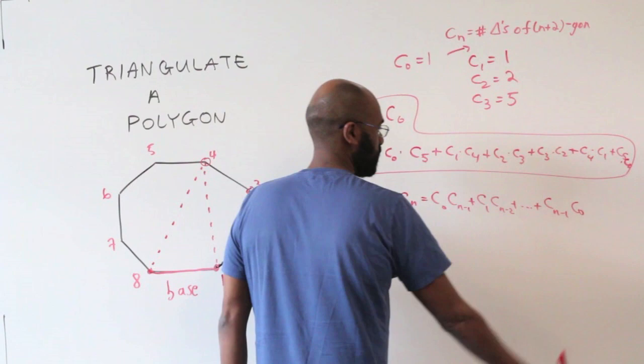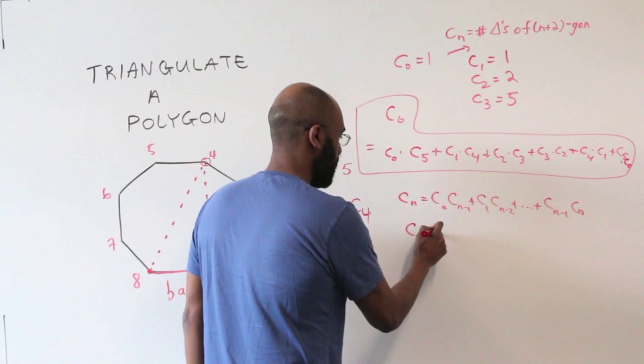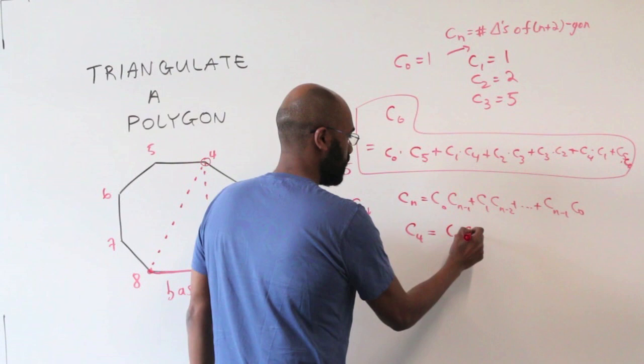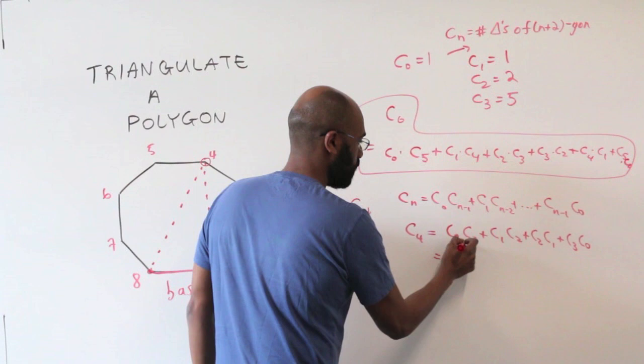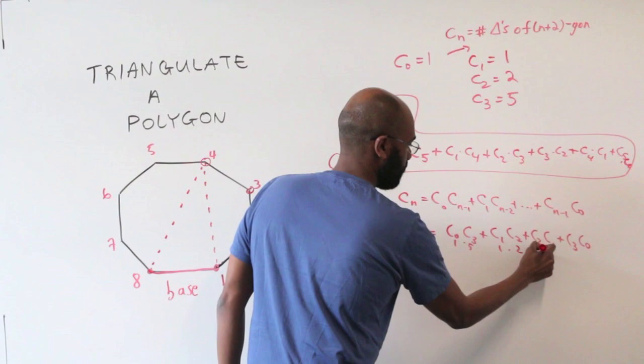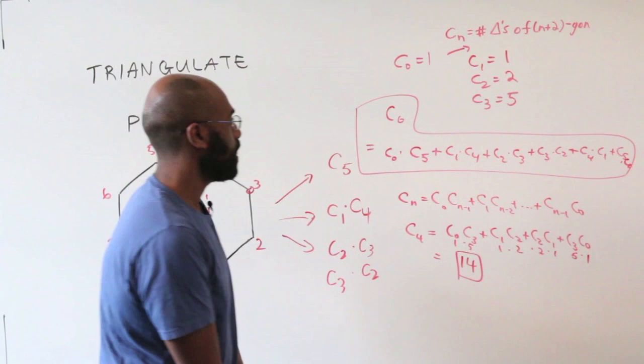Let's use this to calculate more values. C_4, the number of triangulations of a 6-gon, equals C_0·C_3 + C_1·C_2 + C_2·C_1 + C_3·C_0. C_3 is 5 and C_0 is 1, so we have 1·5 + 1·2 + 2·1 + 5·1, giving us 5 + 2 + 2 + 5, for a total of 14. So there are 14 triangulations of a 6-gon. That would have been really difficult to verify by hand.